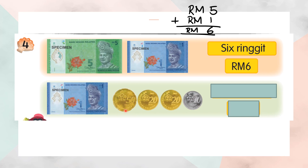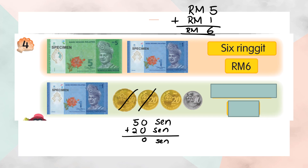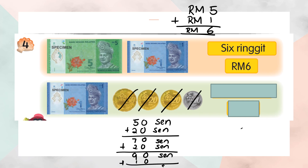Here we have RM1 ringgit and here we have 50 cent, 20 cent, 20 cent, 1 cent. So we calculate coins first — 50 plus 20 plus 20. Zero plus zero is zero, five plus two is seven, and plus another 20 — that's 90 cent. Plus 10 cent again, you will get 100 cent. 100 cent is the same value as RM1 one ringgit. 100 cent sama nilai dengan 1 ringgit.